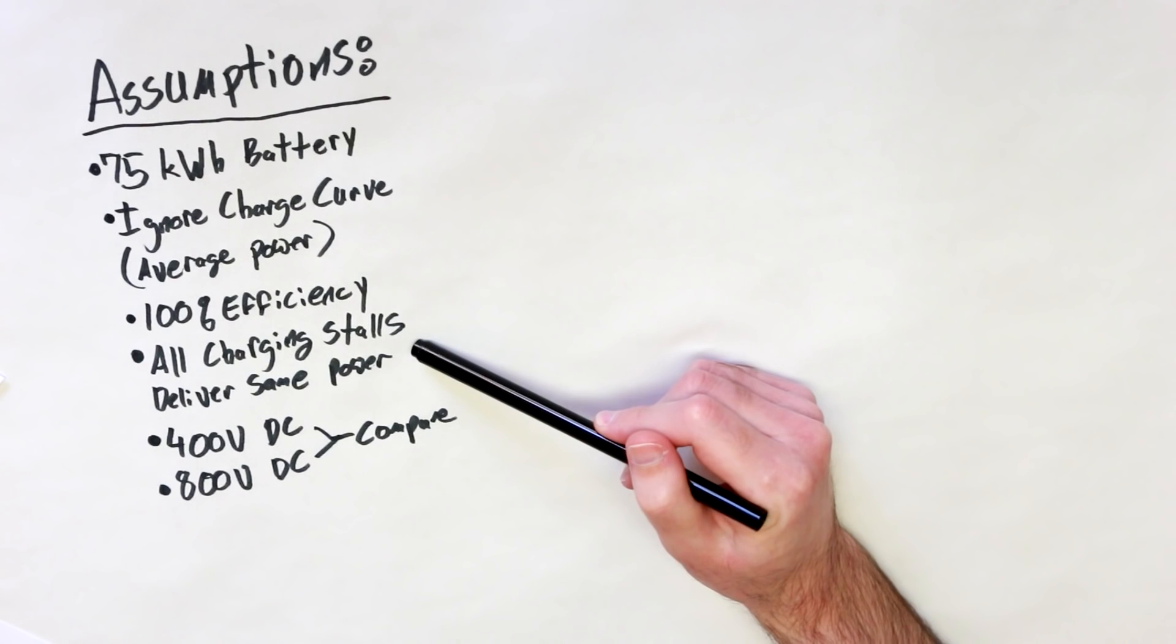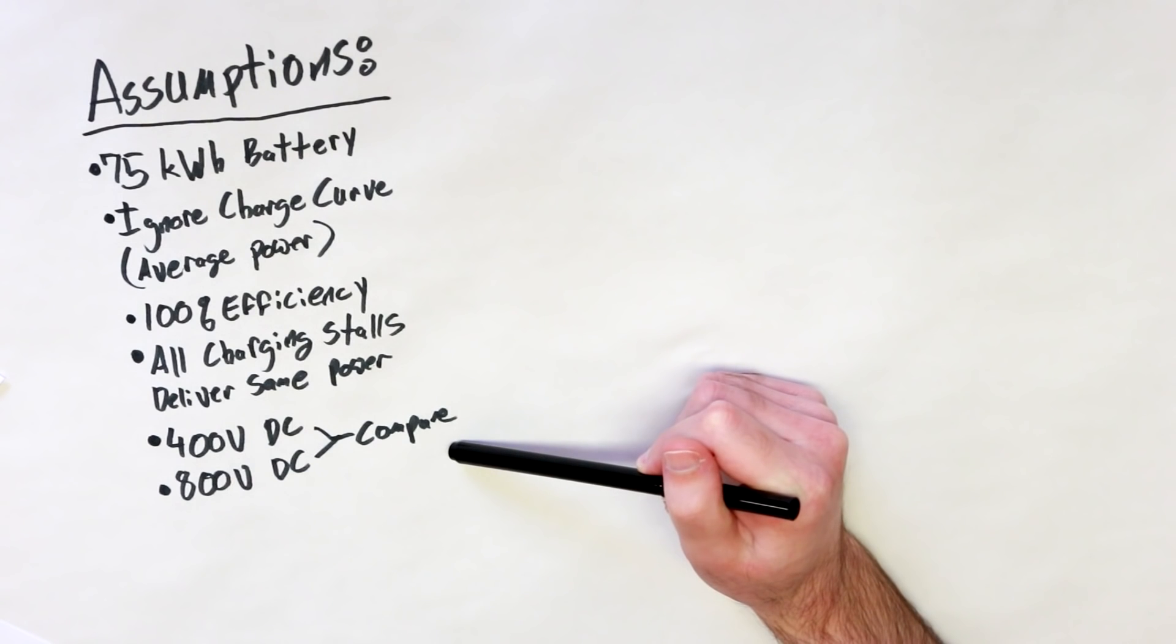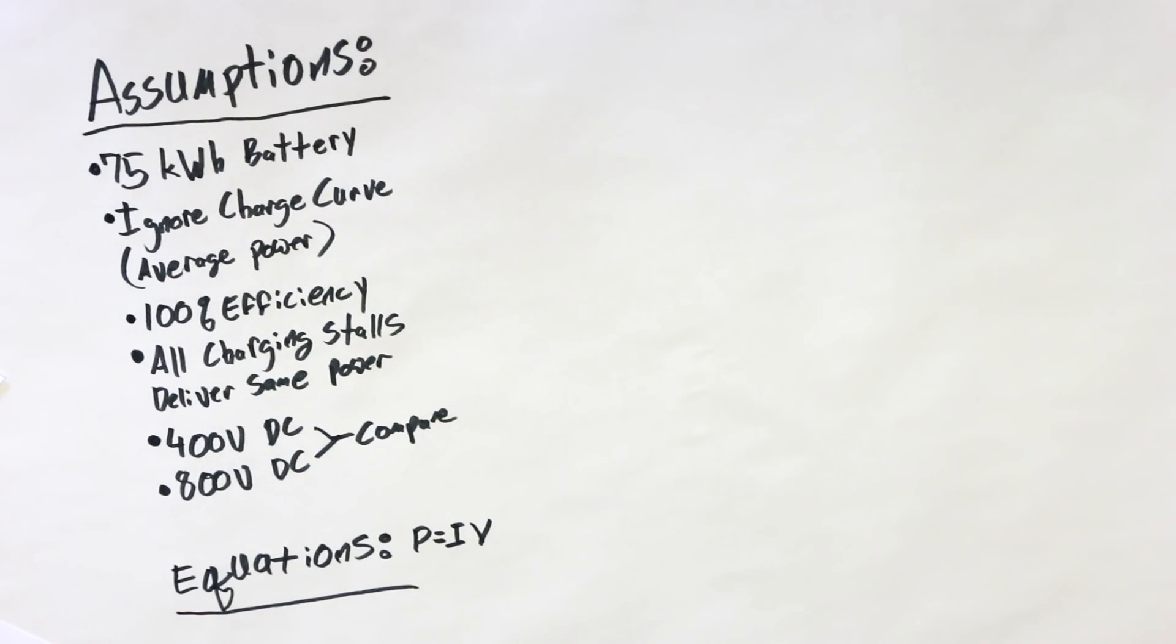I'll be assuming 100% efficiency to make the math cleaner, and also because I don't really have any data about how much energy is lost across the actual hookup equipment for the DC charging standards. For the later part of the hypothetical, I'll be assuming that all charging stalls at a charging station deliver the same amount of power, that way everyone is guaranteed the same charge times, and I'll be comparing both the current 400 volt DC and a potential future 800 volt DC fast charging standard. Now when I said that the math was simple, I really wasn't kidding. The only equation that I'll be using here is P equals IV, power equals current times voltage.